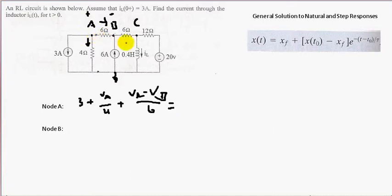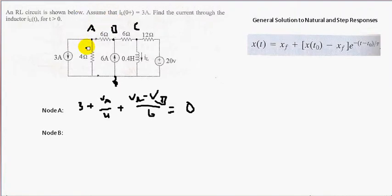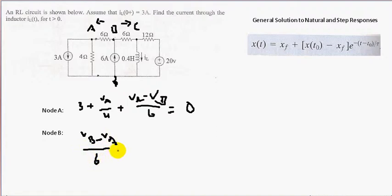That equals the currents going in. Well, we didn't define any currents going in, so it'll be zero. Now for node B, what are the currents going in and going out? Since we have an independent current source going in, let's leave it there and define all other currents going out. So we have VB minus VA over six ohms, plus VB minus VC over six ohms, equals the current going in — six amps.